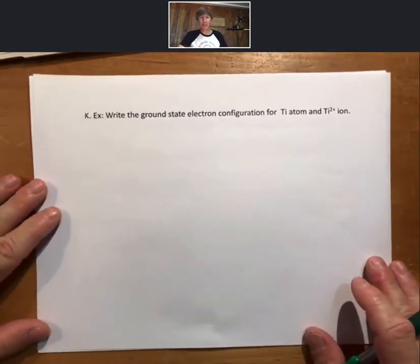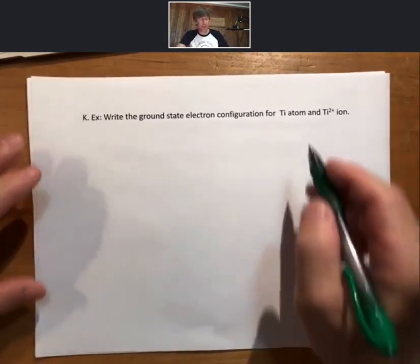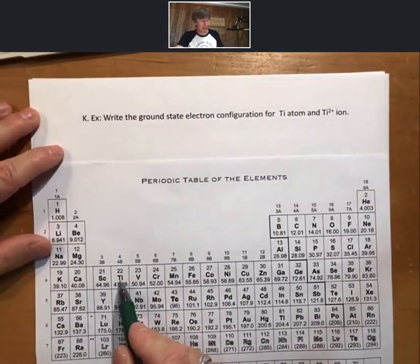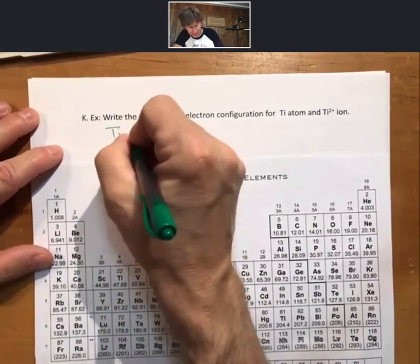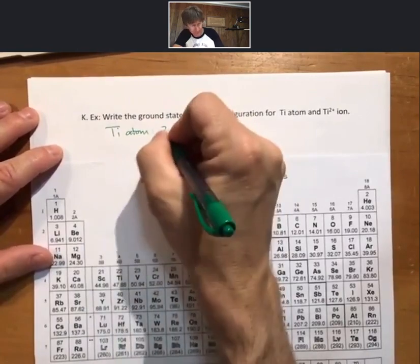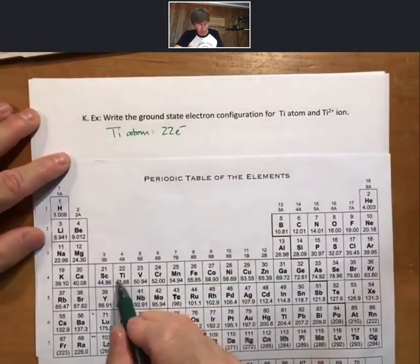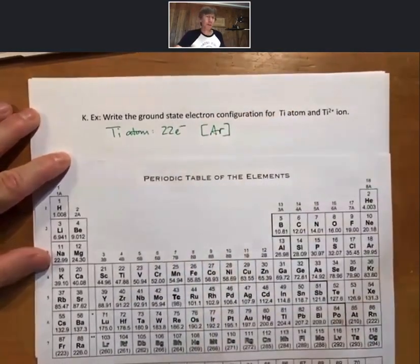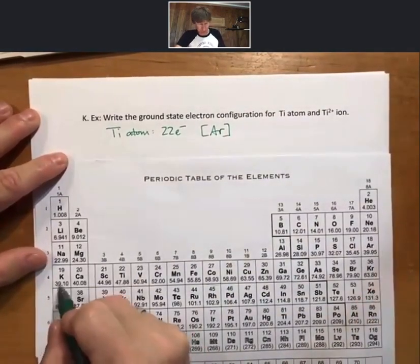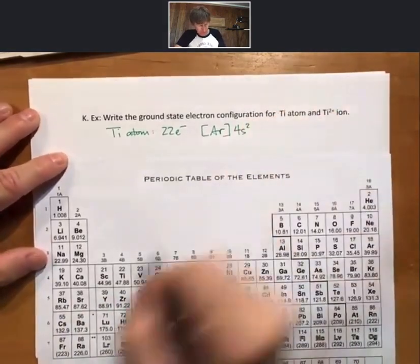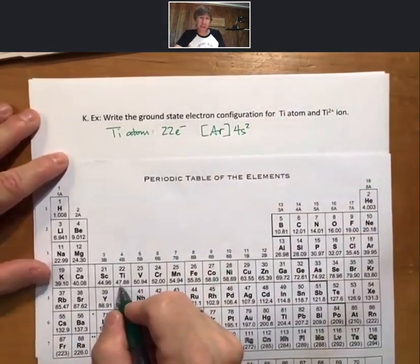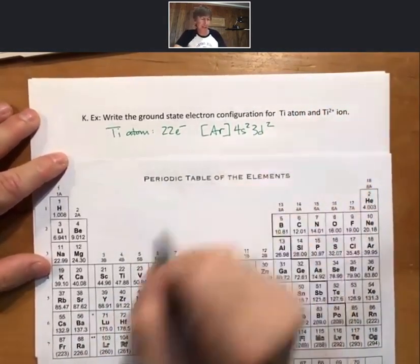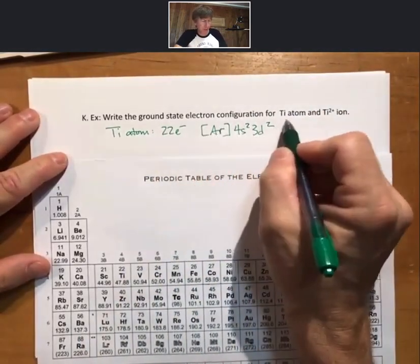Now we'll do the same thing for titanium, using a noble gas core. Starting with the titanium atom, element number 22, going backwards on the periodic table to argon — we get argon for the first 18 electrons, then 4s2, 3d2. Remember, this is 3d, not 4d. So that is the ground state electron configuration for the titanium atom.